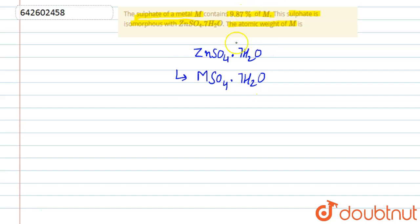Let us assume the atomic weight which we have to calculate for M to be X. Now, we are given that the sulphate of metal contains 9.87 percent of M, which means 9.87 percent of the total weight of the sulphate.